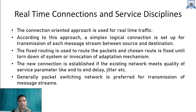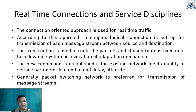Connections are of three types: simplex, half-duplex, and full duplex. In the connection-oriented approach, a simplex logical connection is set up for transmission of each message stream between source and destination. A fixed routing is used — the chosen route is fixed until all messages are transferred. Whenever a new connection is established, if the existing network meets QoS parameters like end-to-end delay and jitter, it is accepted; otherwise the connection is changed. Packet switching network is preferred for real-time message transmission.